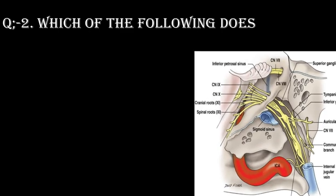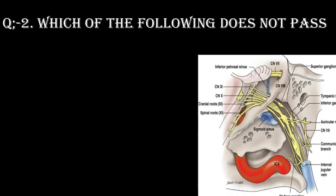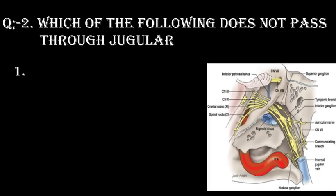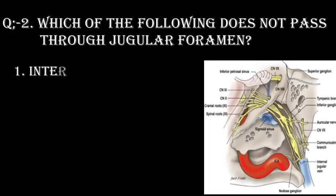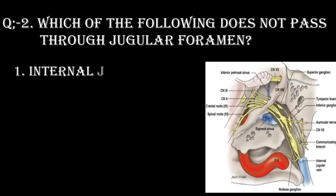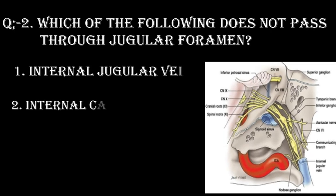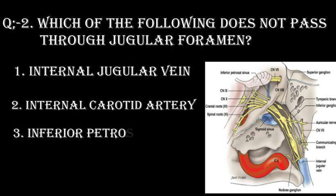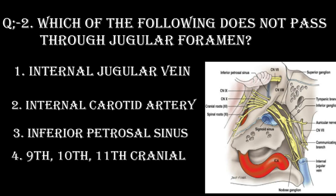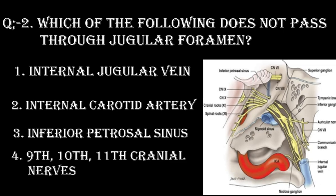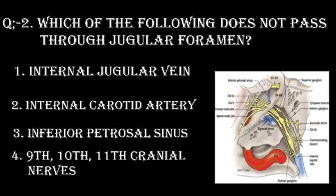Question number 2. Which of the following does not pass through the jugular foramen? Option 1: Internal jugular vein. Option 2: Internal carotid artery. Option 3: Inferior petrosal sinus. Option 4: 9th, 10th, 11th cranial nerves.